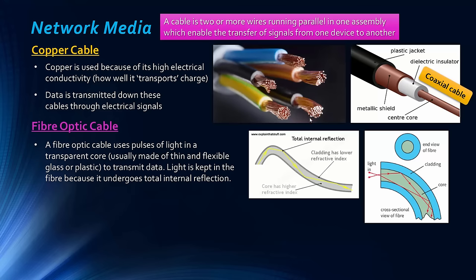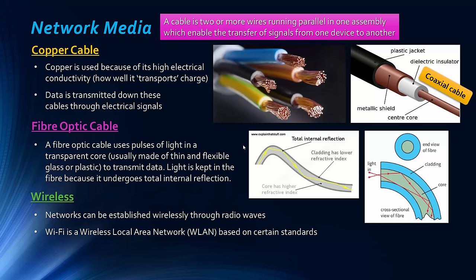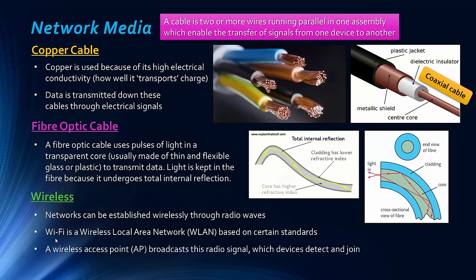The third type is wireless — networks established wirelessly through radio waves. Wi-Fi is a standardised wireless transmission using radio waves; it is technically called a wireless local area network, or WLAN. A standard frequency is used for Wi-Fi. The hardware that actually broadcasts the radio signal is called a wireless access point, which devices can detect and join using a wireless adapter.